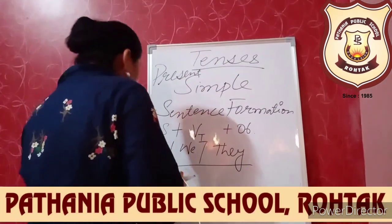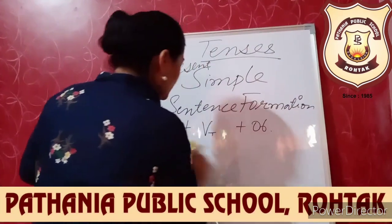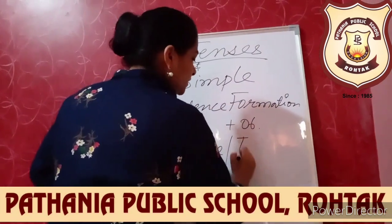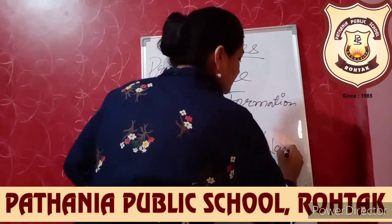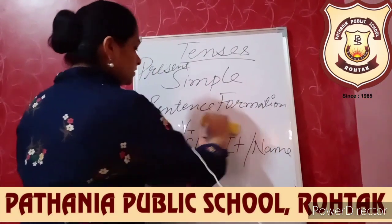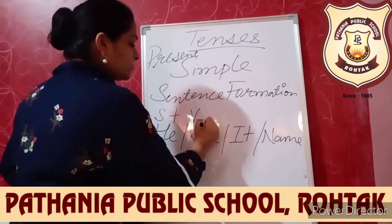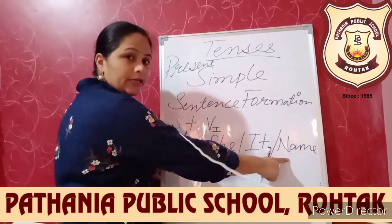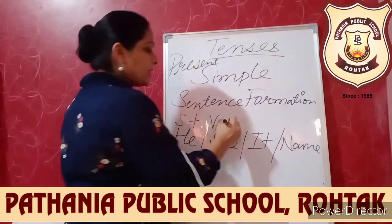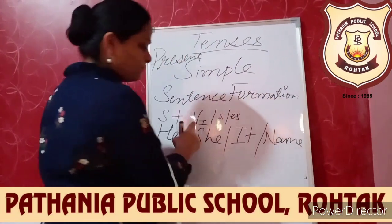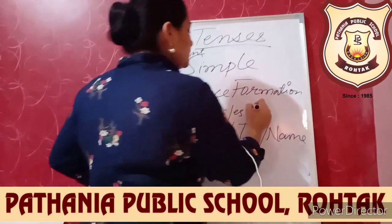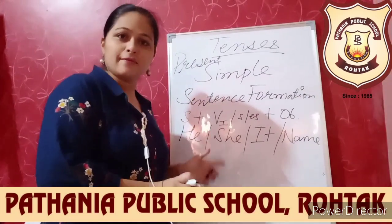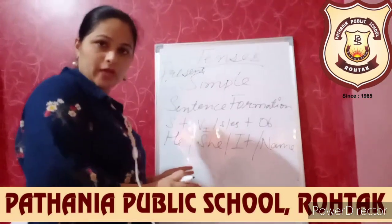But if the subject is he, she, it, or any name, then the sentence formation changes. Instead of just verb first form, we add S or ES with the verb first form. Then comes your object. So I am giving an example so you can better understand it.